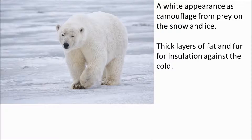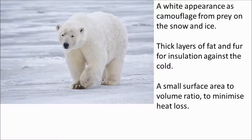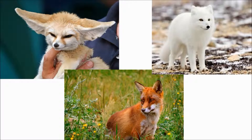A small surface area to volume ratio is another key adaptation. All animals lose heat through their surface — we lose heat through our skin. So if you've got a lot of surface compared to your volume, you're going to lose heat quickly. A polar bear has a small surface area to volume ratio. Creatures in hot conditions often have large ears to increase the surface area and lose heat. You'll have a good idea of the climates of these three foxes by looking at their ears and the colour of their coats.